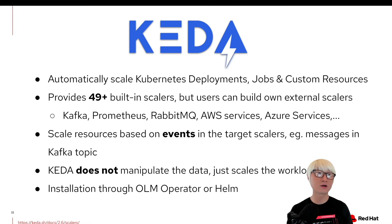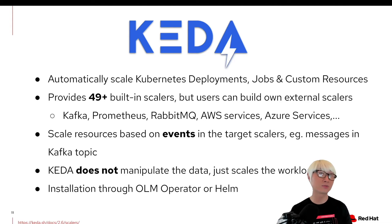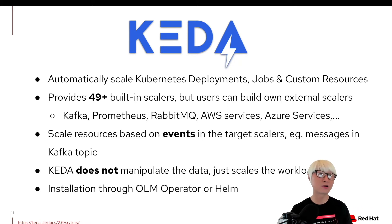KEDA also provides more than around 50 built-in scalers — for example, OPC-UA, Prometheus, RabbitMQ, AWS services, Azure services, and so on. That scalability is based on event-driven application metrics rather than CPU and memory utilization, just like you saw in the first use case demo video.